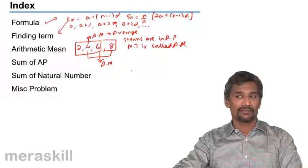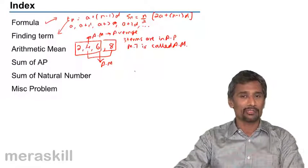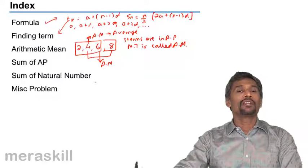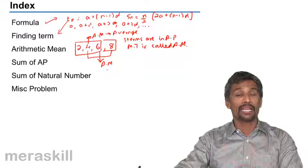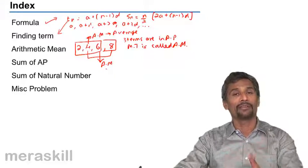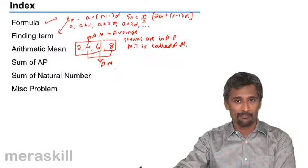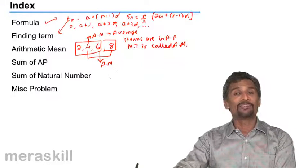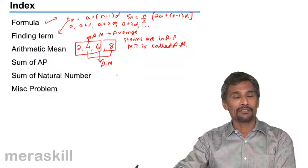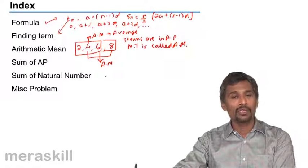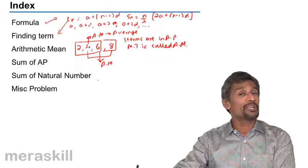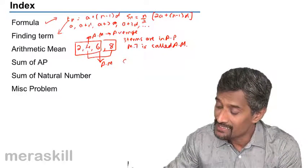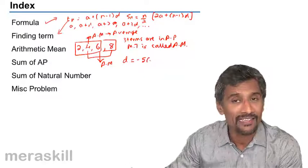one more very important thing: in certain cases, d can be negative. Although we call it progression, it's actually more like a regression. For example, you have to pay some amount every month to clear off your loan, and every month the amount reduces by 50 rupees. So in that case, d would be negative, minus 50. The amount is not increasing, it reduces, so we take d as minus 50 in that case.